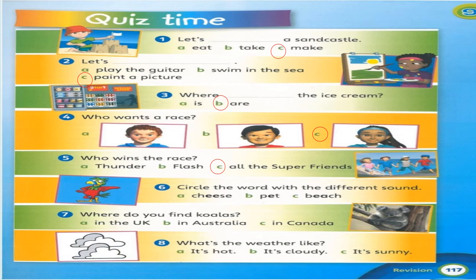Options: A — page, B — page, C — beach. A and C are read with the 'ee' sound like 'cheese' and 'beach', so the answer should be B — page. Number seven: 'Where do you find koalas?' — the answer should be in Australia. Number eight: 'What's the weather like?' — you can look at the left-hand side picture; there are a lot of clouds, so the weather is cloudy.